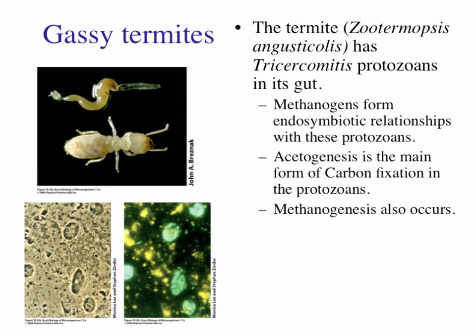Now let's look at termites. A termite gut can be dissected to show three different structures. The termite has protozoans in its gut, and those protozoans have methanogens living symbiotically inside of them. As the protozoans ferment, the methanogens inside perform methanogenesis, releasing gas. Termites also produce a huge amount of methane.